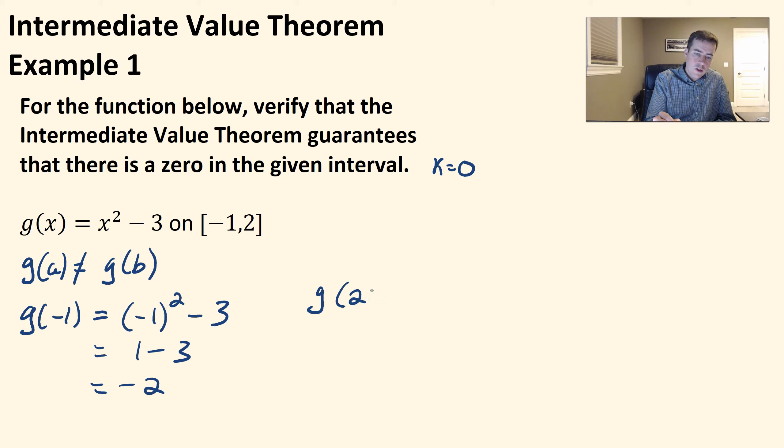And then let's do g of b. g of two would be two squared minus three, which would be four minus three, which is one.